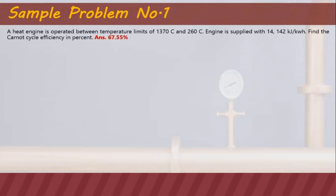The first step is to establish the working formula for the Carnot cycle efficiency. Looking back at our discussions, Carnot cycle efficiency equals 1 minus TL over TH, where TL is the temperature of the low temperature reservoir and TH is the temperature of the high temperature reservoir.